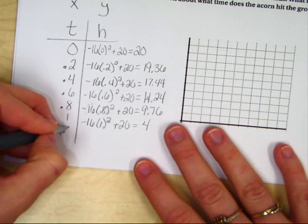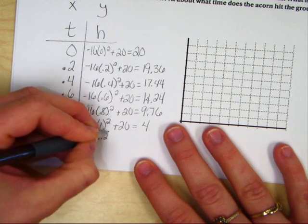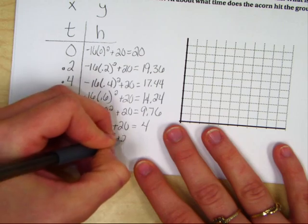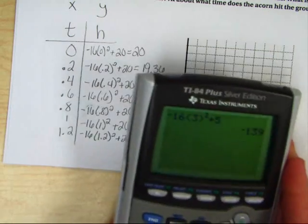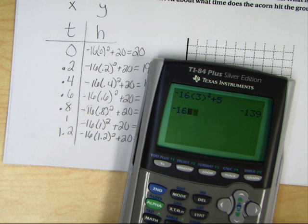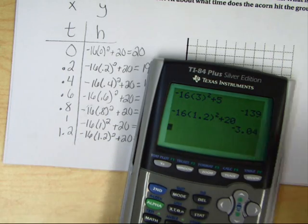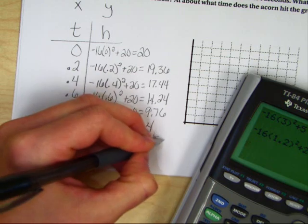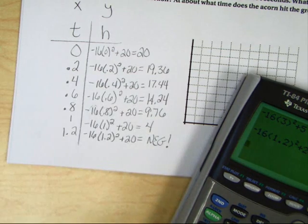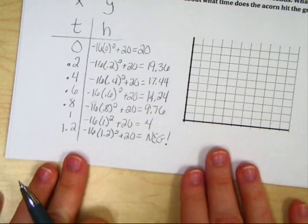Keep going, guys. Keep plugging it in until you reach 0 feet because when you reach 0 feet, it's hit the ground. I'll show you this one, what it looks like when you plug it in. And I think you guys know, but let's make sure. Negative 16, 1.2 squared, plus 20. All right. Notice on this one, it reaches a negative. All I want you to write here is negative. It's a negative answer.